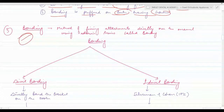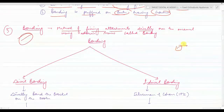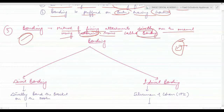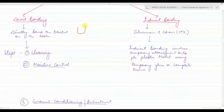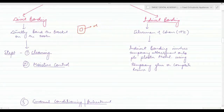After banding, the second step is bonding — the method of fixing an attachment like a bracket directly onto the tooth over the enamel using adhesive resin. Bonding is of two types: direct bonding and indirect bonding. In direct bonding, the bracket is placed directly onto the tooth by etching and sealing. In indirect bonding, brackets are first placed onto a plaster model.